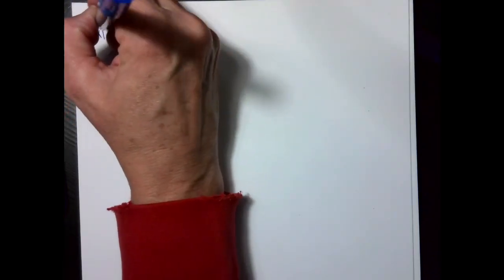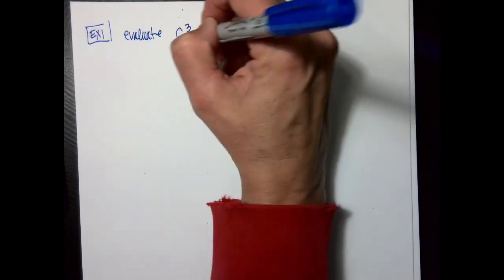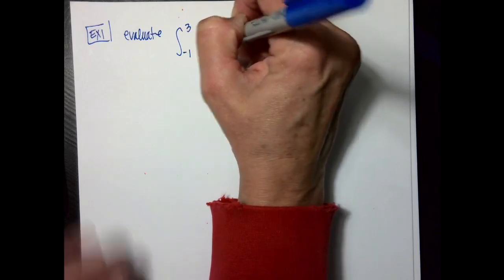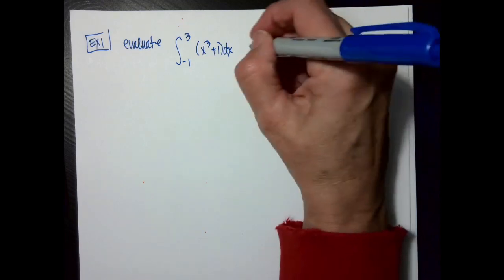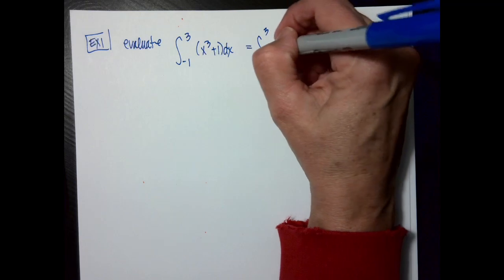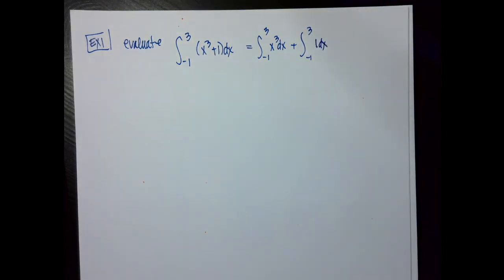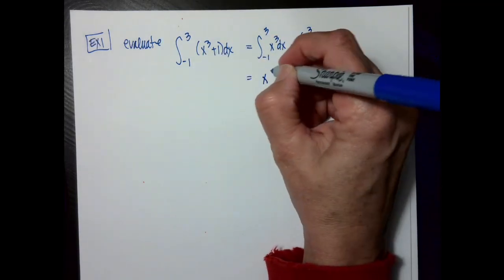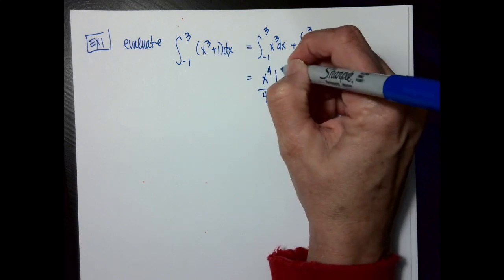Let's do our first example. I want to evaluate the integral from negative 1 to 3 of x cubed plus 1 dx. Properties of antiderivatives say I could split this up into the integral from negative 1 to 3 of x cubed dx plus the integral from negative 1 to 3 of 1 dx, but I'm going to just go from the beginning. The cube is going to go up in power, I divide by the new power, and evaluate from negative 1 to 3.